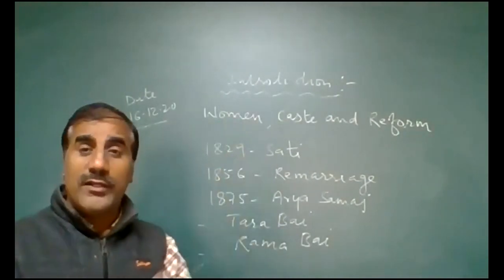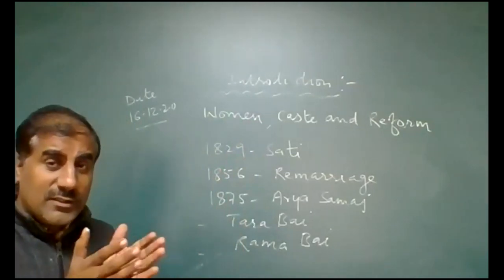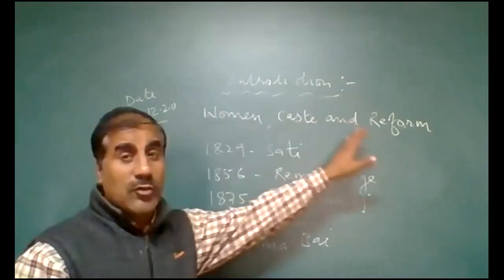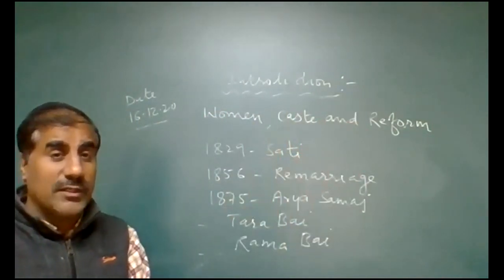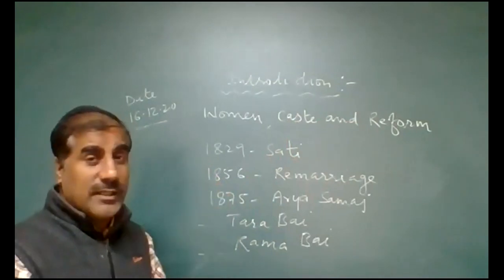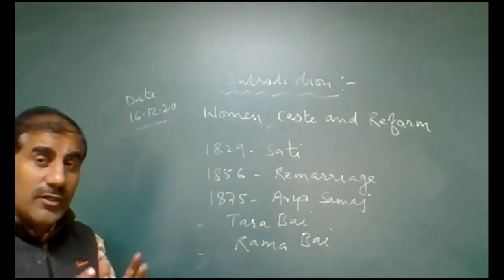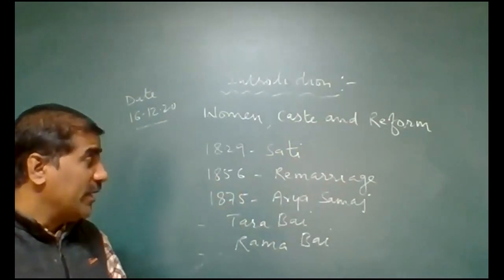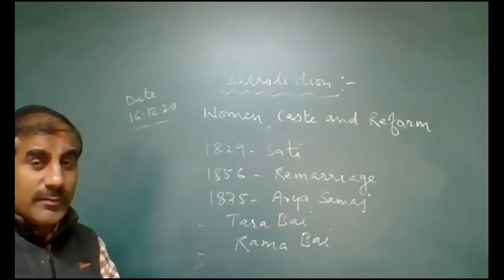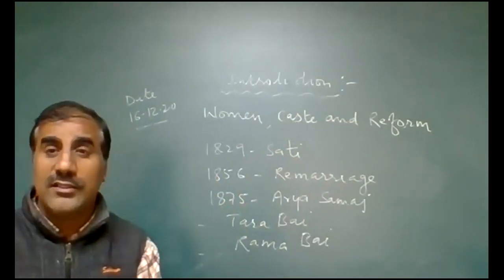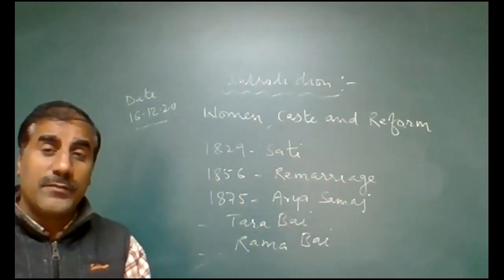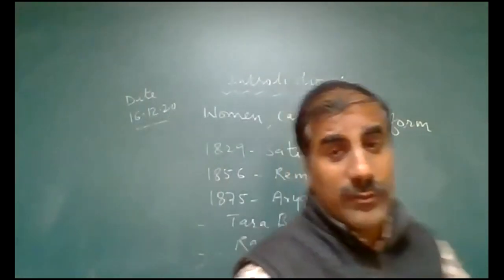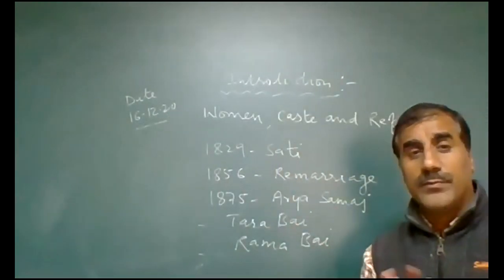In this chapter, we will discuss women, caste, and the words that are related to them. We will discuss their reform and how new laws were made. We will discuss Sati Pratha, what it was. We will also discuss remarriage, and different persons like Jyotiba Phule, Tara Bhai, Yama Bhai, Swamivivekananda, and the book Gulam Giri.